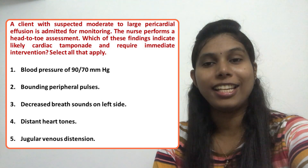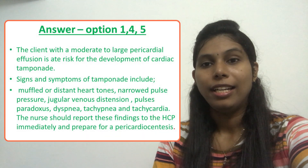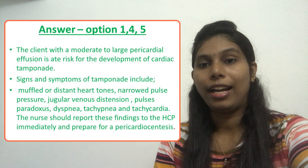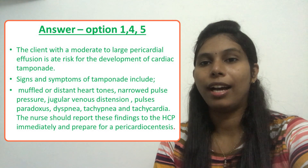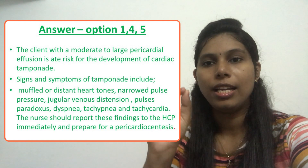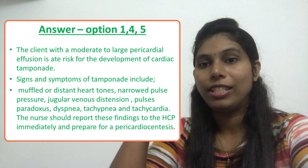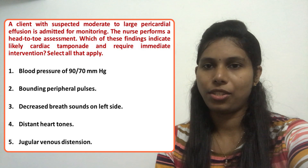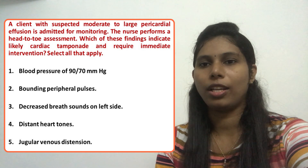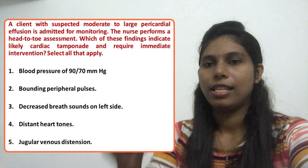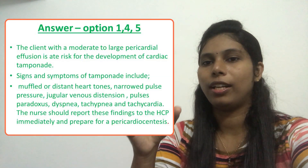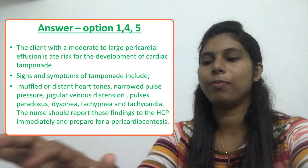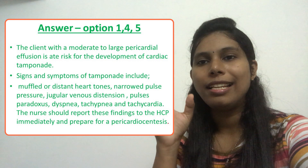Option four: distant heart tones. Yes, that is a correct answer. We studied that muffled heart sounds or distant muffled heart tones are one of the signs within Beck's triad — a common sign of cardiac tamponade. Option five: jugular venous distension. Yes, JVD is also one of the signs in Beck's triad and a correct answer.